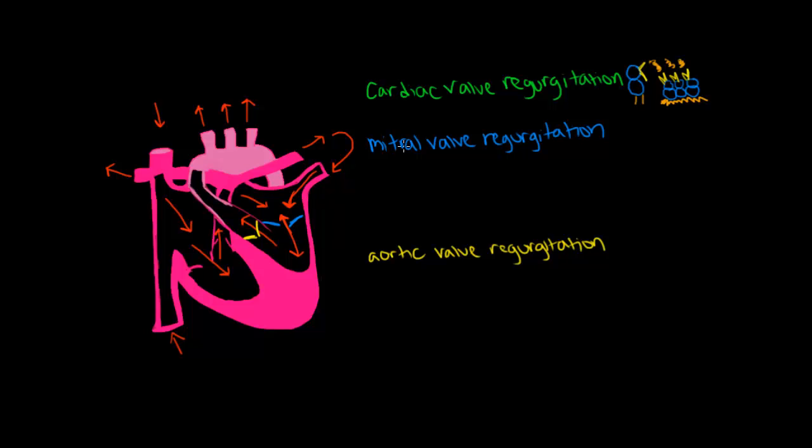In the case of mitral valve regurgitation, instead of all of the blood going from the left atrium to the left ventricle, a little bit of the blood will come back up into the left atrium. Similarly, with aortic valve regurgitation, instead of all of the blood going from the left ventricle up to the aorta through the aortic valve, some of the blood will go back out of the aorta and back into the left ventricle. As you can imagine, this is quite problematic.